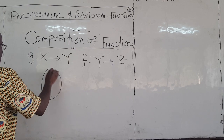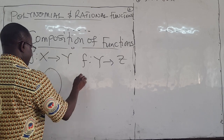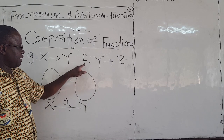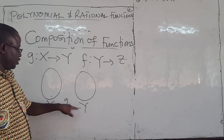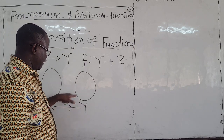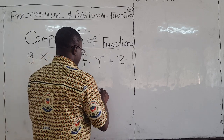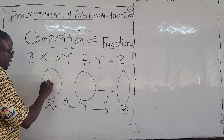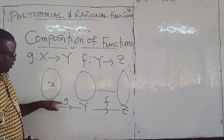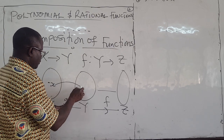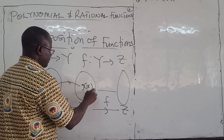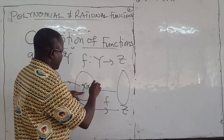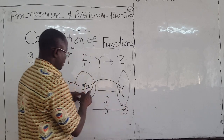So I like this sketch. G takes elements from X to Y. The domain of F is the range of G. So F takes elements from Y, let's say, to Z. Given an element X here, G takes X and gives you G of X. Then F takes elements from the Y side and gives you F of whatever is here, which is G of X.